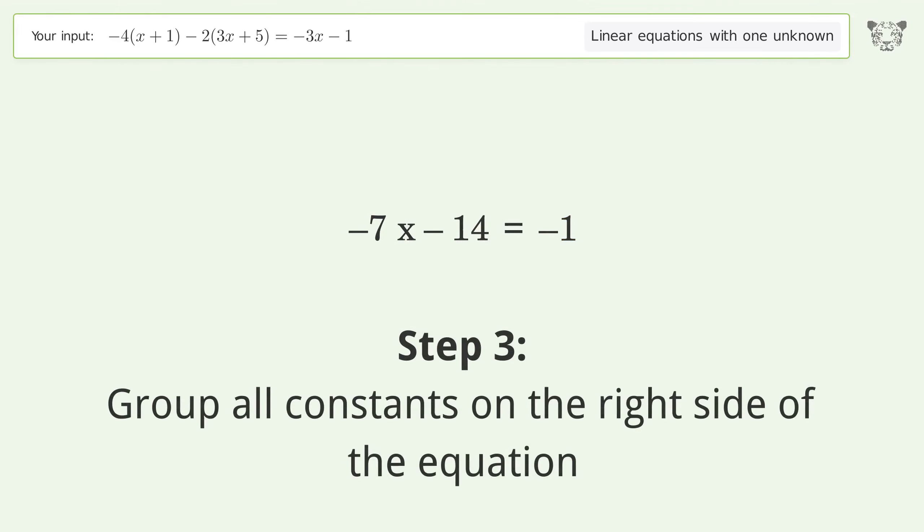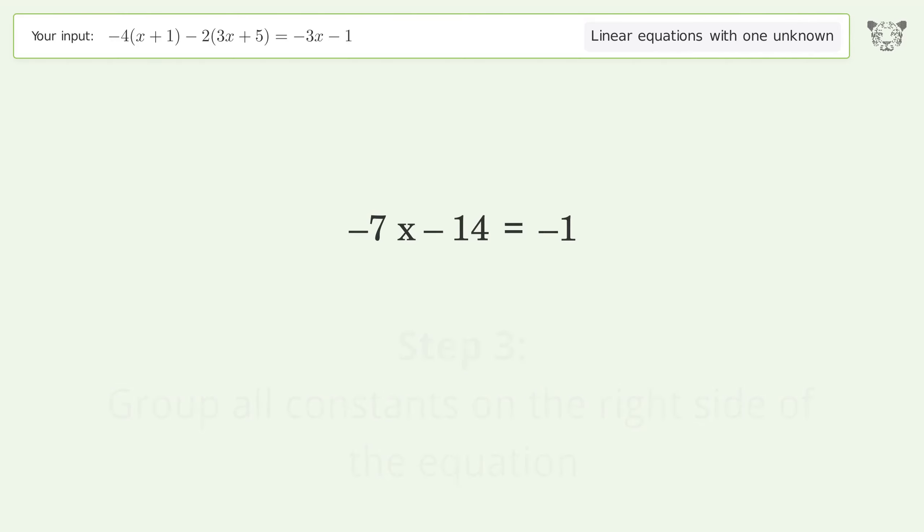Group all constants on the right side of the equation. Add 14 to both sides. Simplify the arithmetic.